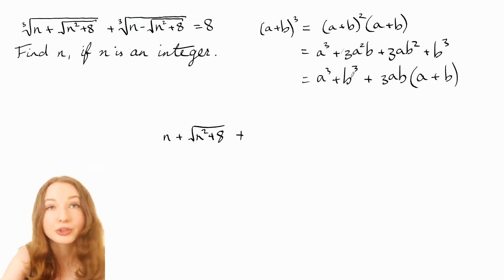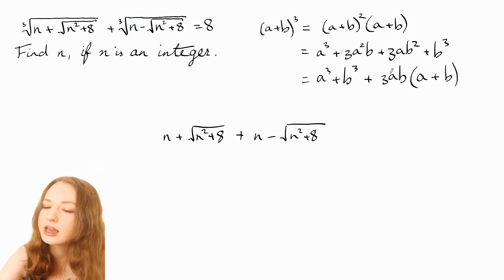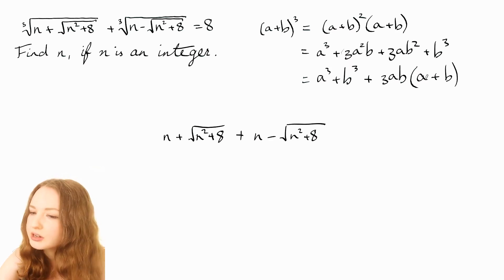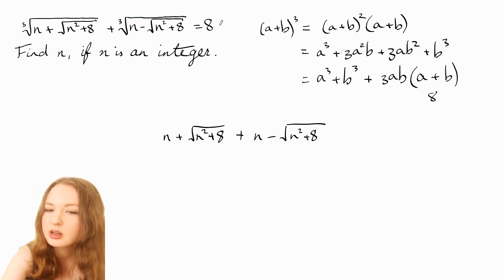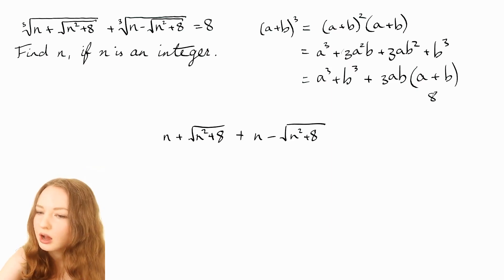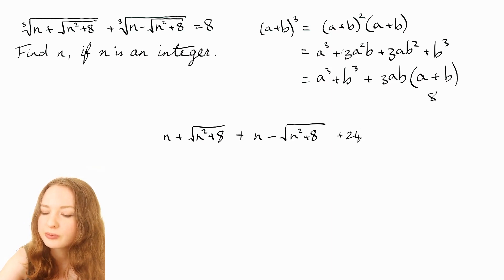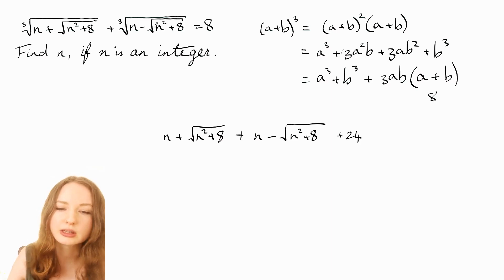and then we've got 3ab and then actually since that was 8, because a + b is just this which equals 8, let's just simplify that and turn that into 24. And then we've got the a times b so that times that.